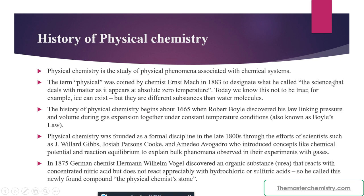Physical chemistry is the study of physical phenomena associated with chemical systems. It has grown from a combination of many sciences including experimental physics and quantum mechanics. The term 'physical chemistry' was coined by chemist Ernest Mach in 1883 to designate what he called the science that deems matter as it appears at absolute zero temperature, though today we know this not to be entirely true — for example, ice and water are different substances.